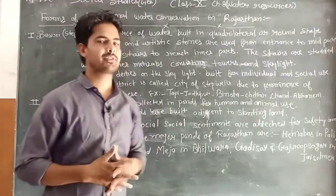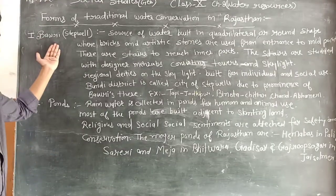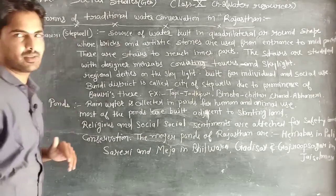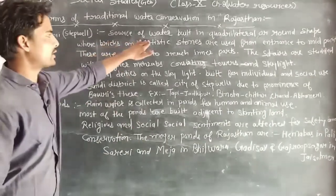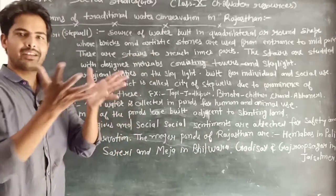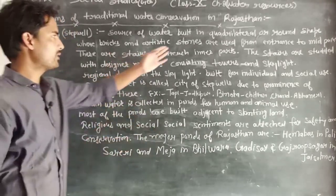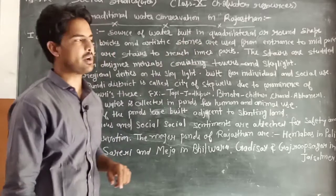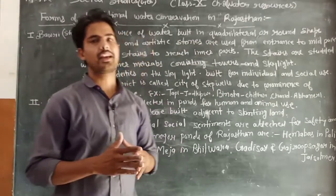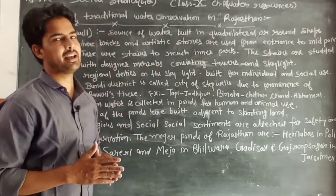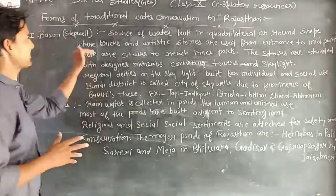The first form of traditional water conservation in Rajasthan is the Bawdi, also called a step well. A Bawdi is a source of water – a place to collect water – built in quadrilateral or round shape. It can be either quadrilateral (rectangular/square) or rounded.